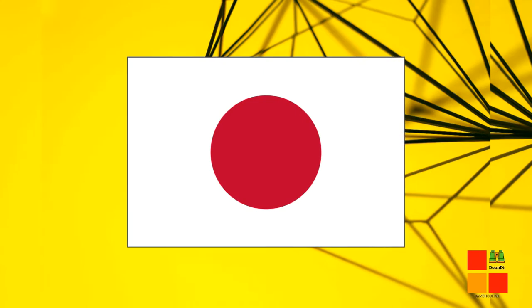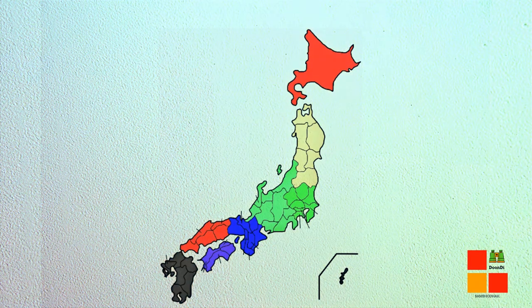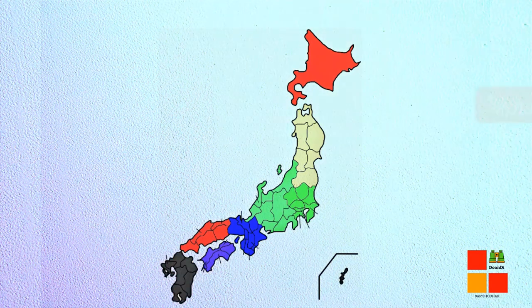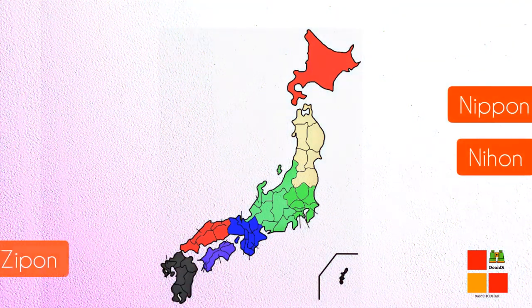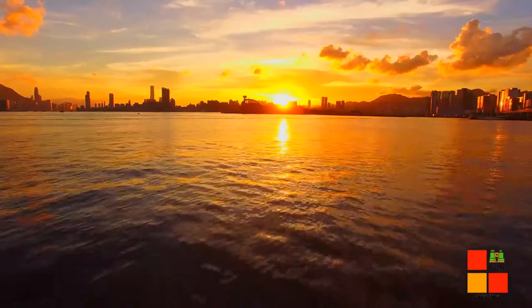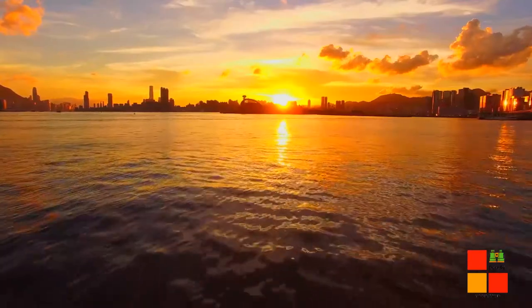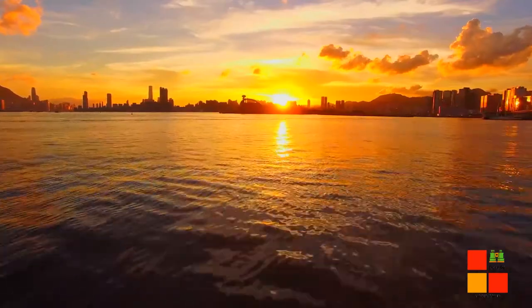Japan is located in the Pacific Ocean and is an island in East Asia. It has several names: Nippon, Nihon, Zippin, Sapangu, and Yamato. The word Nippon or Nihon means 'origin of sun' or 'rising sun.'